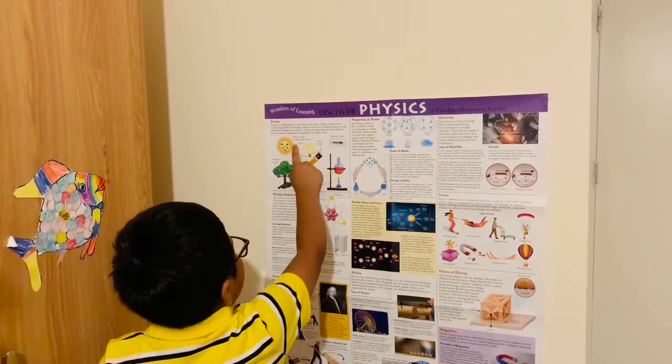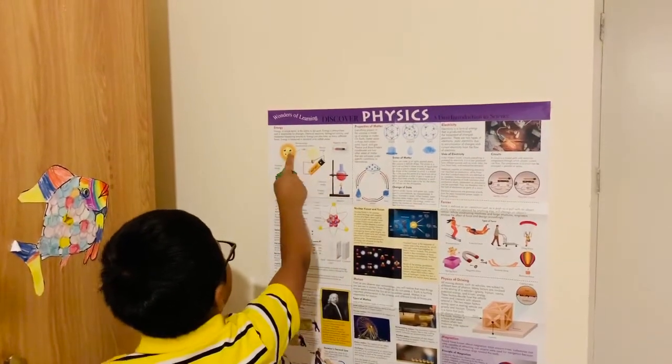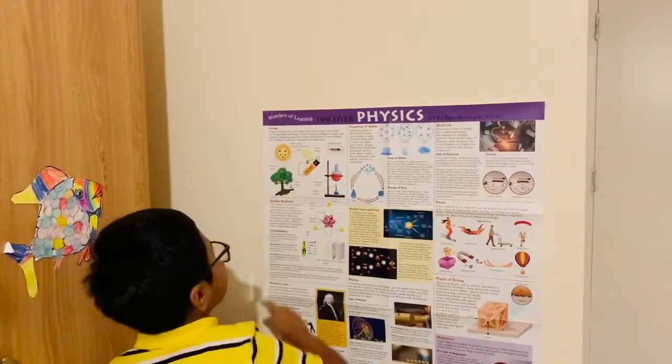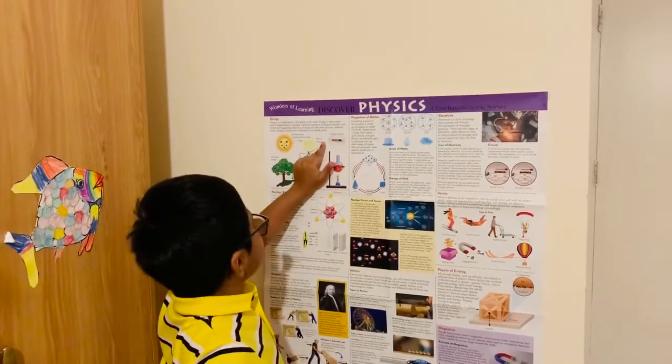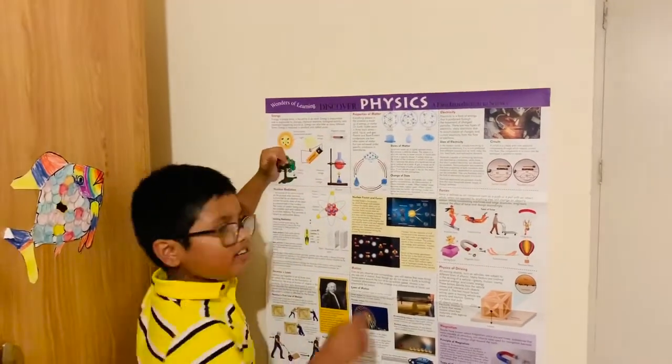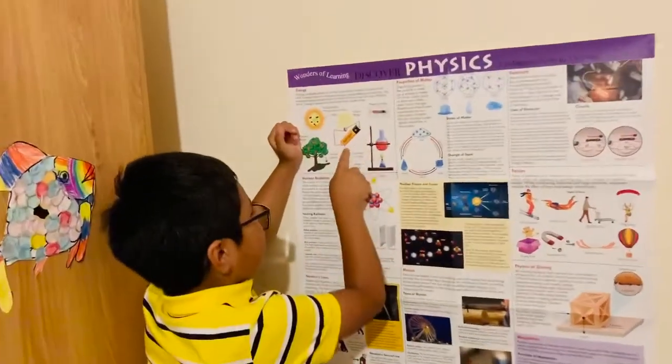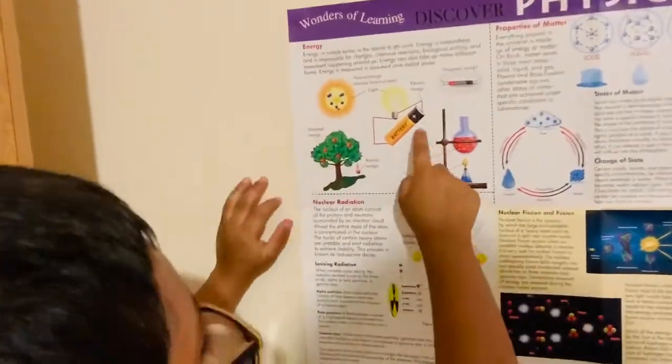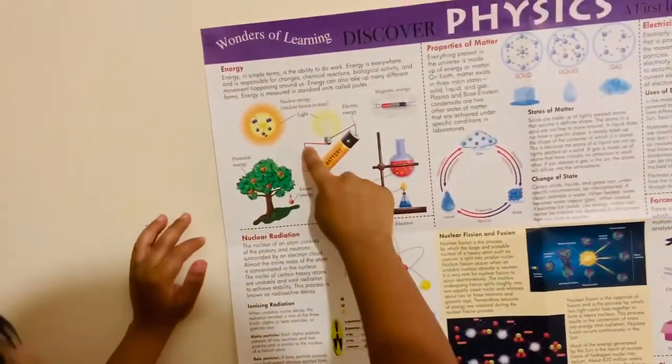Nuclear energy, nuclear fusion in stars. So this is how it is. Electric energy. So yeah, see it. Battery and battery. As you can see, battery powers the light.